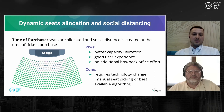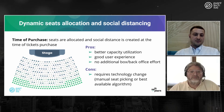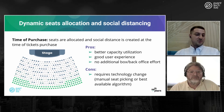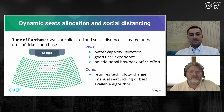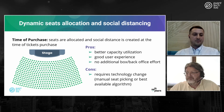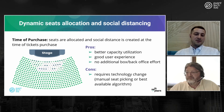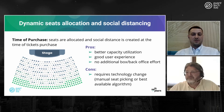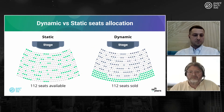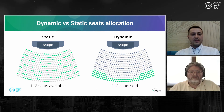Those surrounding seats become unavailable for the next patron buying tickets. The result is better capacity utilization, a good user experience since patrons know where they'll be sitting, and no need for event organizer staff to be involved in seating arrangement. To achieve this, the ticketing system must adopt technology changes in the pick-your-own-seats or best available algorithm functions.